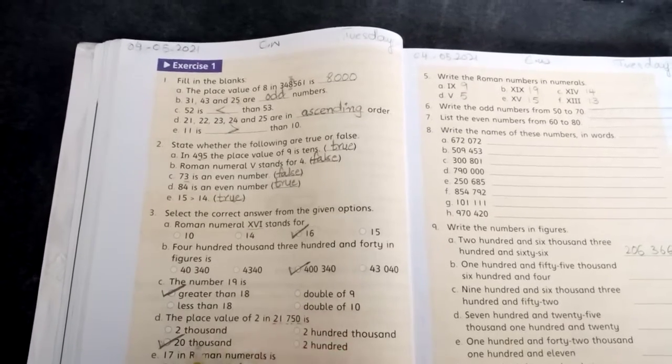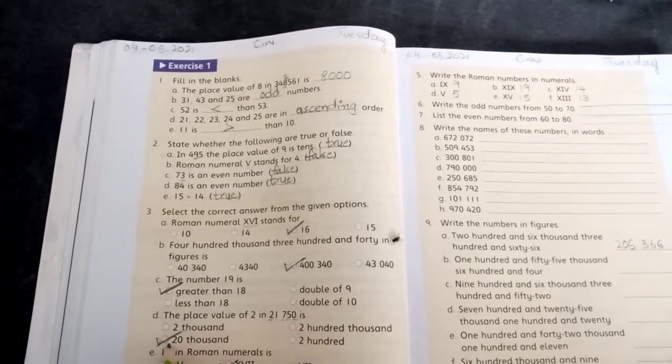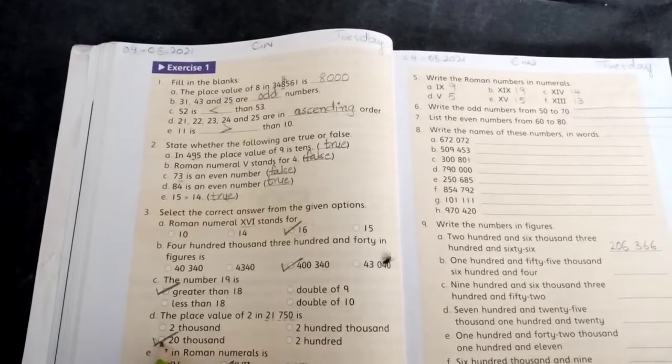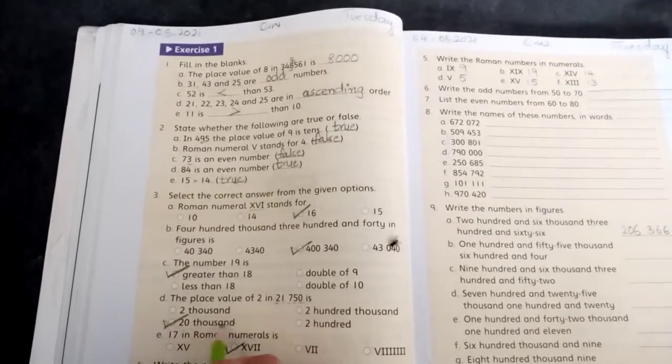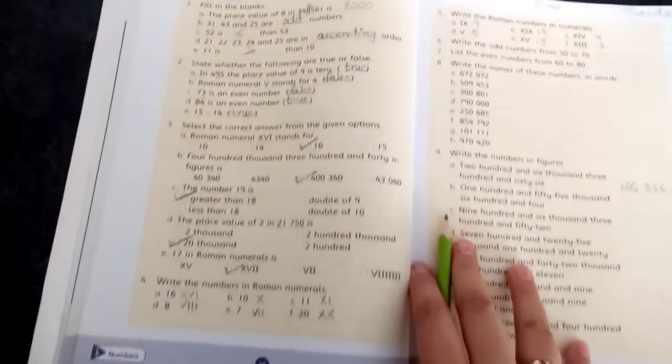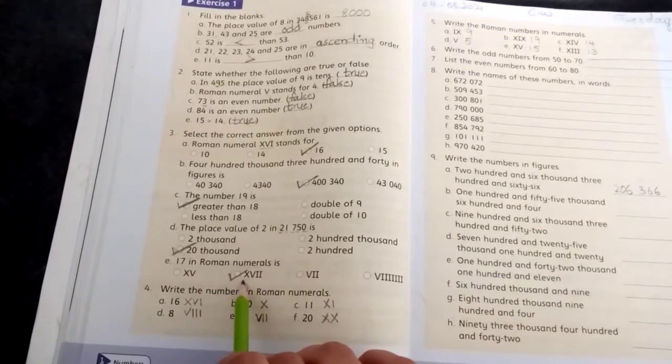The place value of 2 in this is, 2 ki value kya hai, 1s, 10s, 100s, 1000s, 10,000. 20 is made. 2 into 10 is made, 20 is made, 20,000 answer. Next, 17 in Roman numerals equals to this.